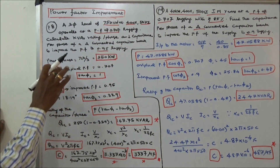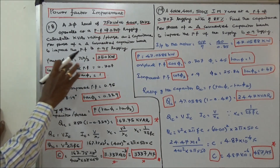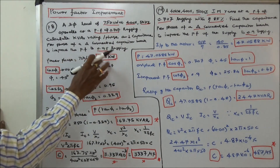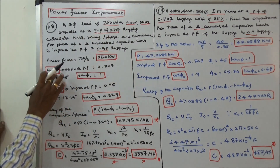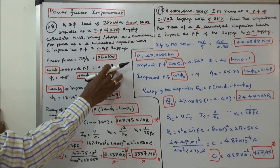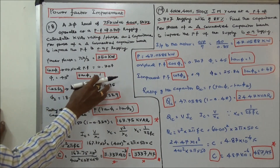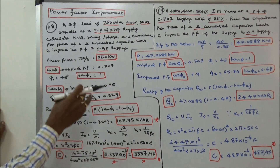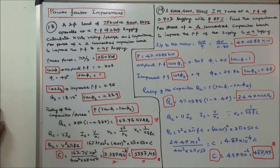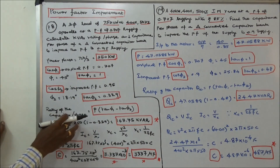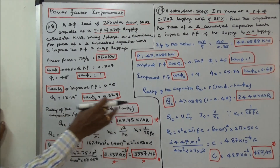Here the power is given 750 kW. Per phase power is 750 divided by 3, equal to 250 kW. Original power factor cos φ1 is equal to 0.707. Tan φ1 is equal to 1. Improved power factor is 0.95. Tan φ2 is equal to 0.329. Rating of the capacitor per phase QC is equal to P into (tan φ1 minus tan φ2).